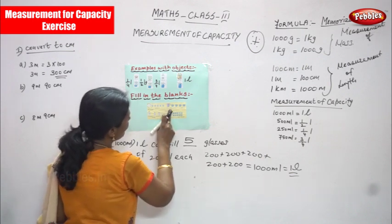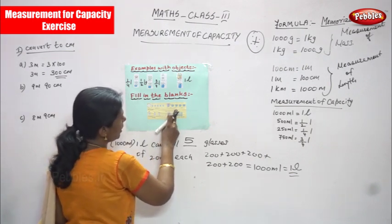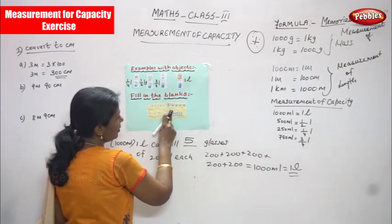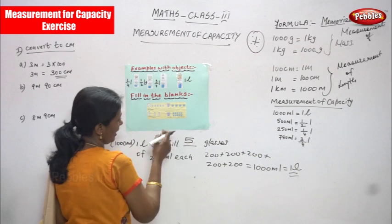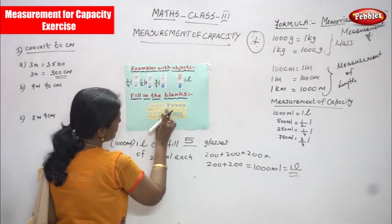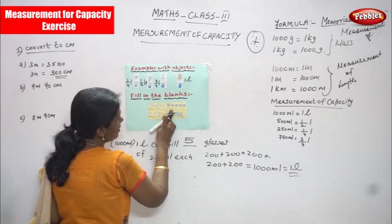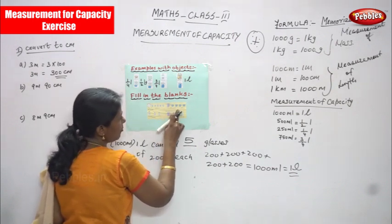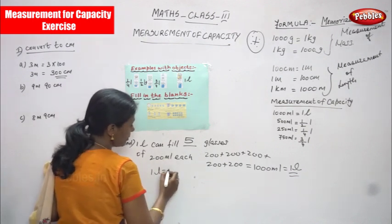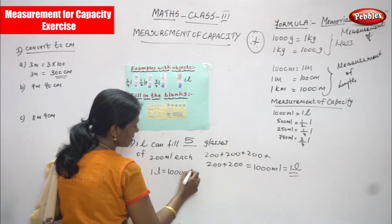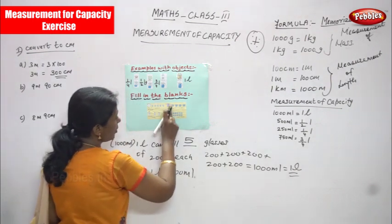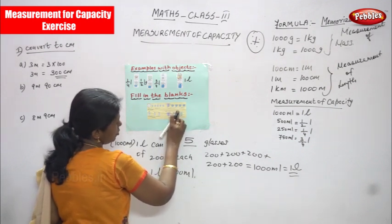Next one is: 1 liter can fill 4 cups of dash ml of each. 1 liter fill — 1 liter can. This is also a can. 1 cup as a big cup, whatever you can consider. 1 liter can fill 4 cups of dash ml of each. 1 liter is how much? If you convert into milliliter — you know that very well — 1000 ml. So each glass, that is 4 cups in order.